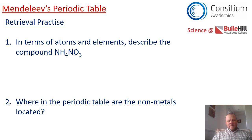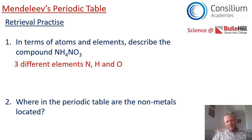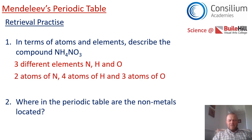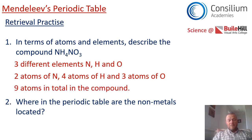How did you get on? NH4NO3 is a compound, but I'm asking you to describe it in terms of atoms and elements. Did you spot that there are three elements? There is nitrogen, hydrogen, and oxygen. There are two atoms of nitrogen, four atoms of hydrogen, and three atoms of oxygen in that compound. How many atoms in total? Simply add the three numbers up — there are nine atoms in that compound.